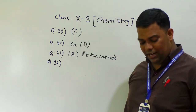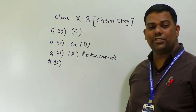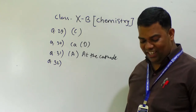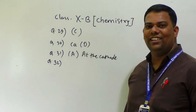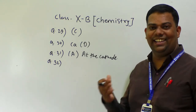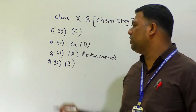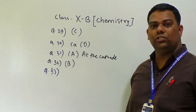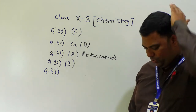For question 32, option A — Zn + H₂SO₄ giving ZnSO₄ + H₂ — is a single displacement reaction. Option B — HgNO₃ + NaBr giving HgBr + NaNO₃ — is a double displacement reaction. Option C is a combination reaction, and option D is a decomposition reaction. So the answer is option B.